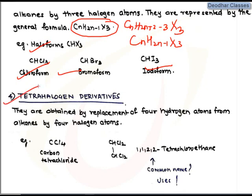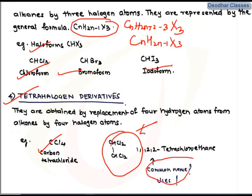The next category is tetrahalogen derivatives, where four hydrogen atoms are replaced by four halogen atoms. The common example is carbon tetrachloride. Another example we encountered in the study of alkynes is 1,1,2,2-tetrachloroethane. You are asked to find its common name and uses as a homework exercise.